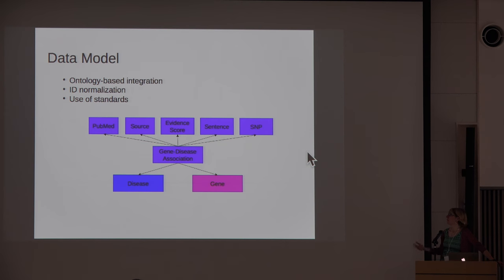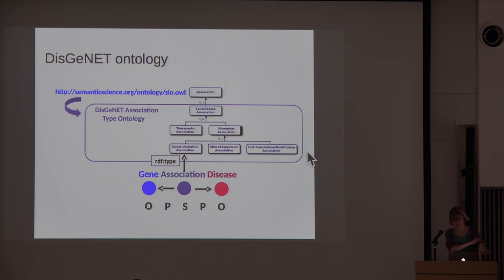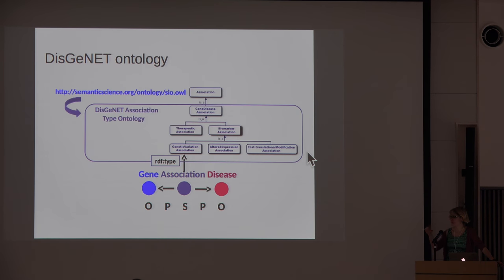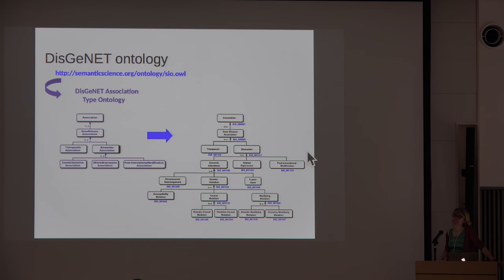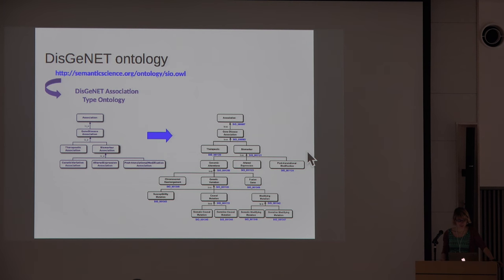We developed a small ontology describing these gene-disease associations, formalizing how the biomedical databases we integrate describe these associations. This ontology is included in SAIO. In this last release, the ontology has evolved to a more complex version, mainly because of the integration of Orphanet.